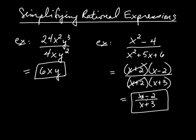Now we can't cancel any further. You might look at this and think you can cancel the x's. But you can't, and the reason is because x is not attached through multiplication. You can never cancel when it's subtraction or addition — only if what you want to cancel is attached through multiplication, like x plus 2 was attached through multiplication right here.